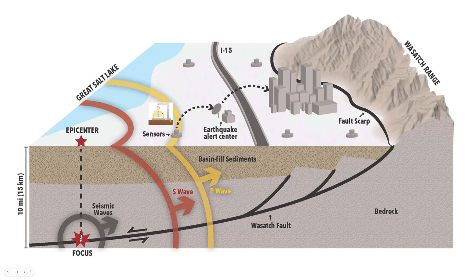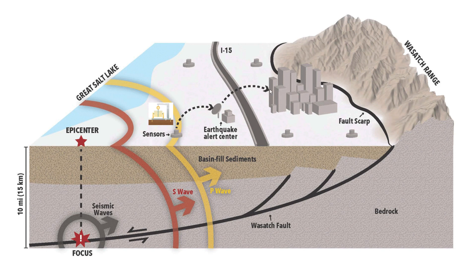When an earthquake happens at the focus, the epicenter is on the surface directly above it. The earthquake releases seismic waves — three types: P waves, S waves, and L waves. We focus on P and S waves because they travel through the interior of the Earth. P waves travel fastest and arrive at the sensor first, then S waves arrive later. The sensors record the waves via seismographs and send that information using electromagnetic waves to an earthquake alert center.